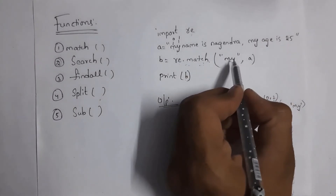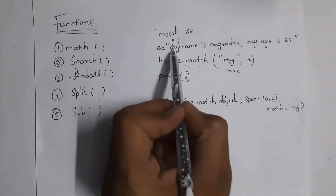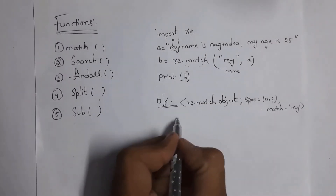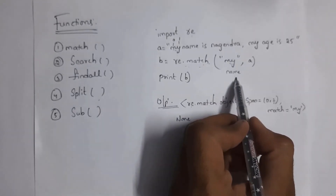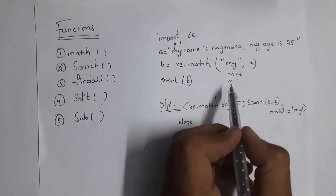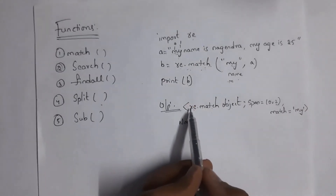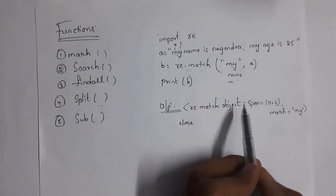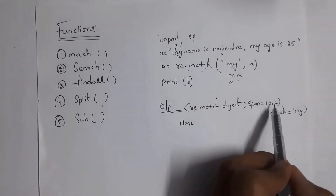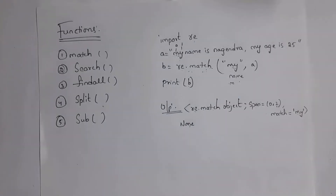For example, if instead of 'my' I write 'name', it will check whether 'name' is available at first or not. 'name' is not available at first, so I will get output None — if given characters are not available at first it will display None. If I write just 'M', it will check whether 'M' is available at first — yes it is, so I get span=(0, 1) and match='m'. This is the use of the match function.